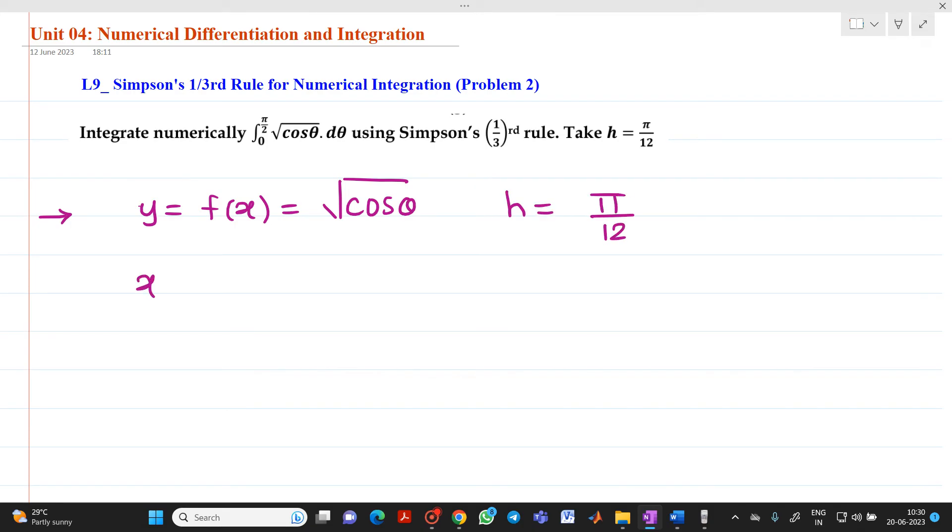If you see, the lower limit x₀ is represented as 0 and upper limit is represented as xₙ will be equal to π/2. Therefore, we will calculate the number of intervals n will be equal to (xₙ - x₀)/h. That is, if you see, what is your xₙ?